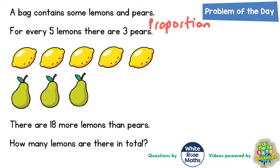We're told that a bag contains some lemons and pears. For every five lemons there are three pears. Now it's worth noting that that is a difference of two, so there are two more lemons than pears. Difference of two.